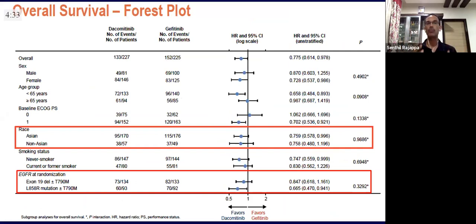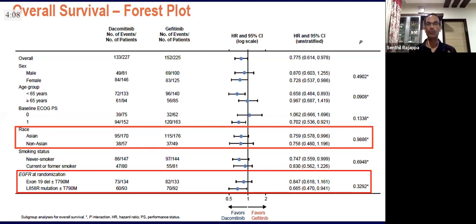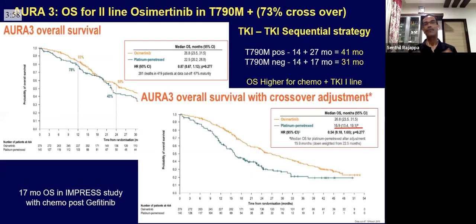Looking at the forest plot, I want you to compare this to what you saw in FLORA. Here, Asian and non-Asian patients both seem to be benefiting. Interestingly, exon 19 deletions don't seem to benefit as much as in FLORA, while L858R seems to benefit more. However, always look at the interaction p-value on the right side — it is not significant, which tells us one should not read too much into this subset analysis.